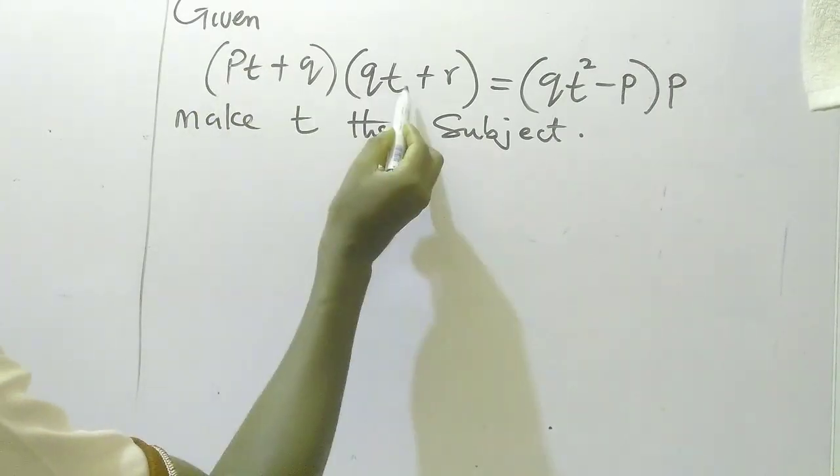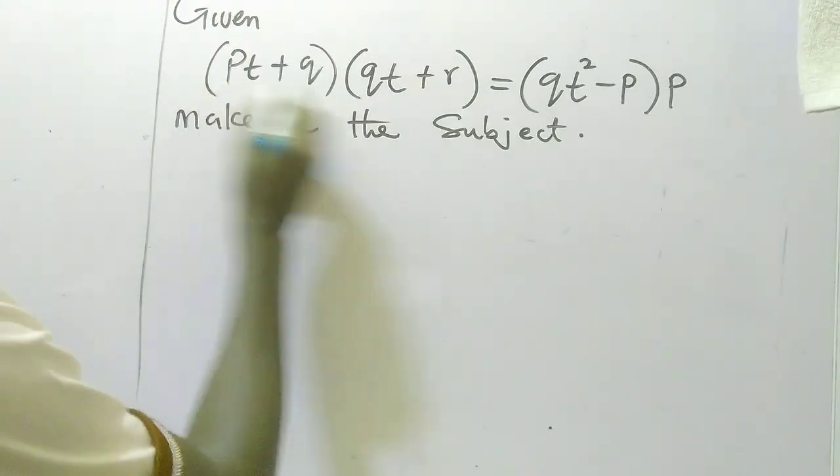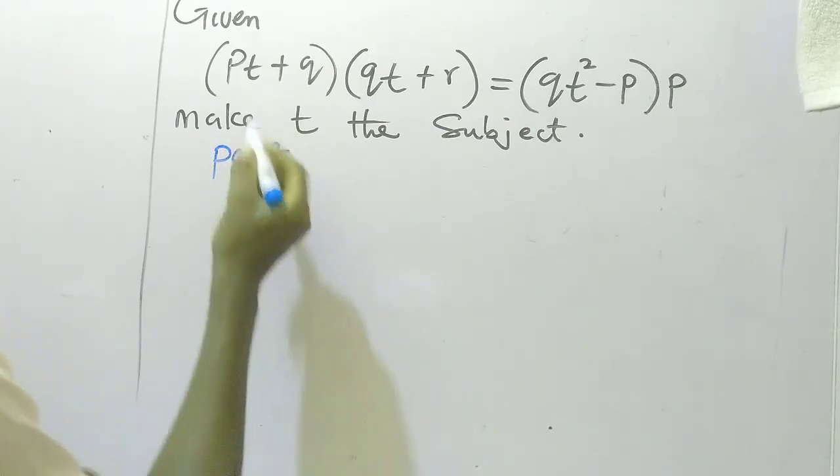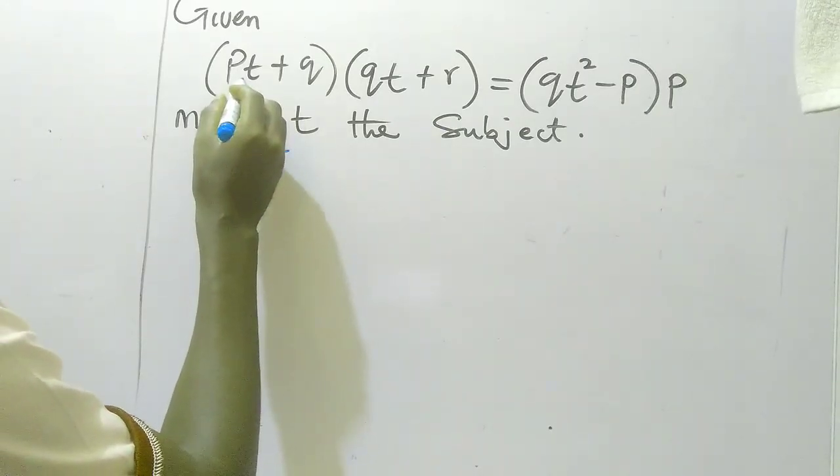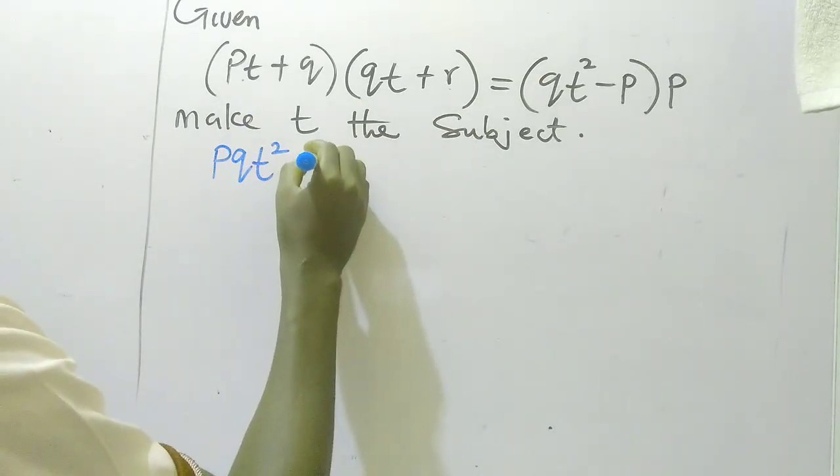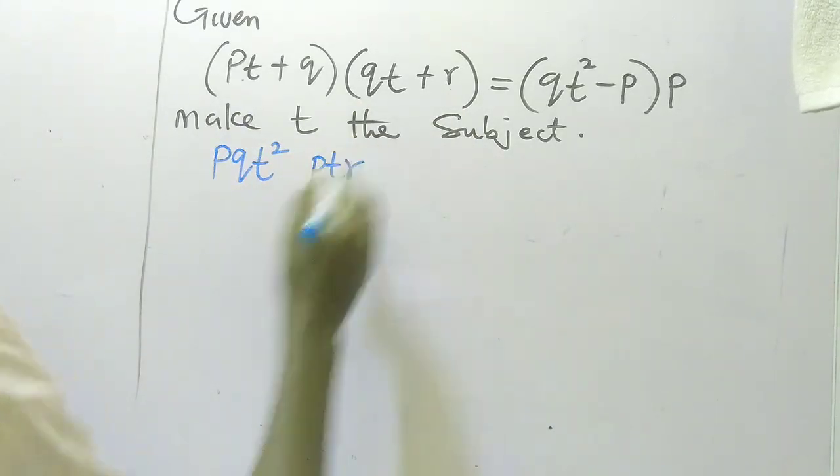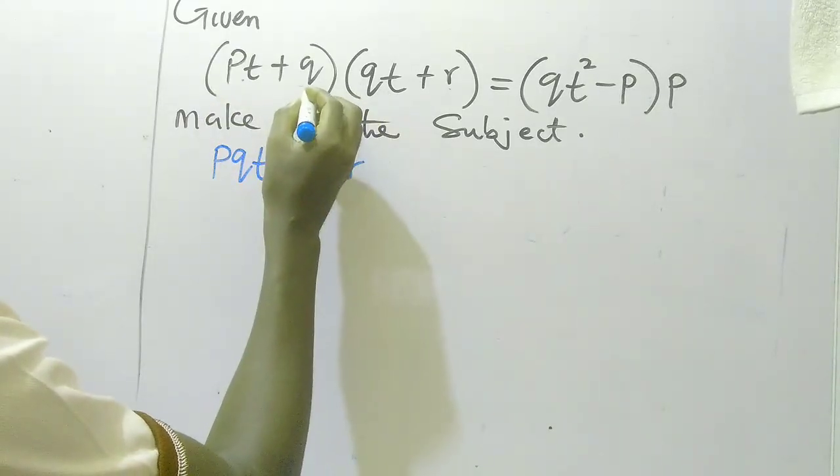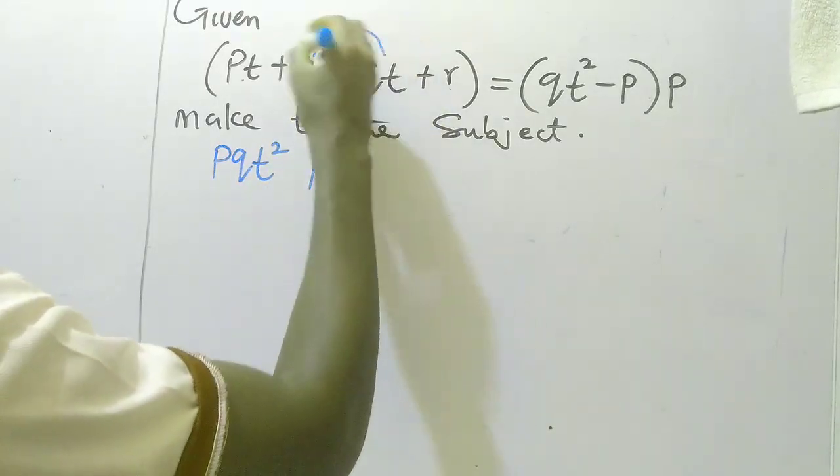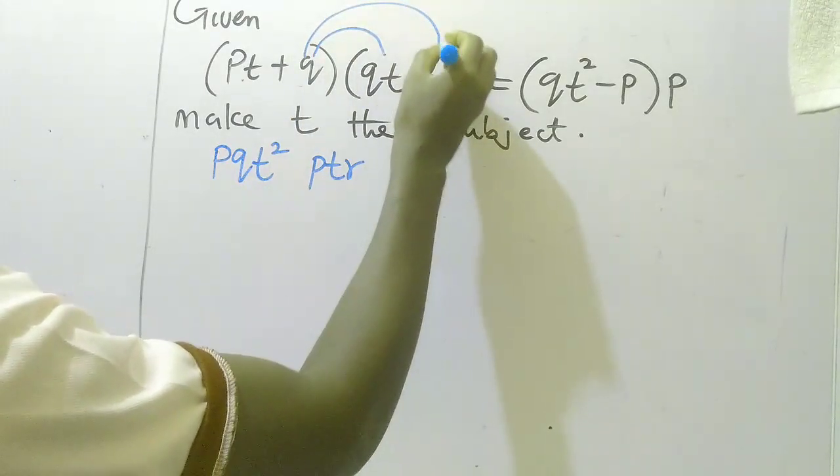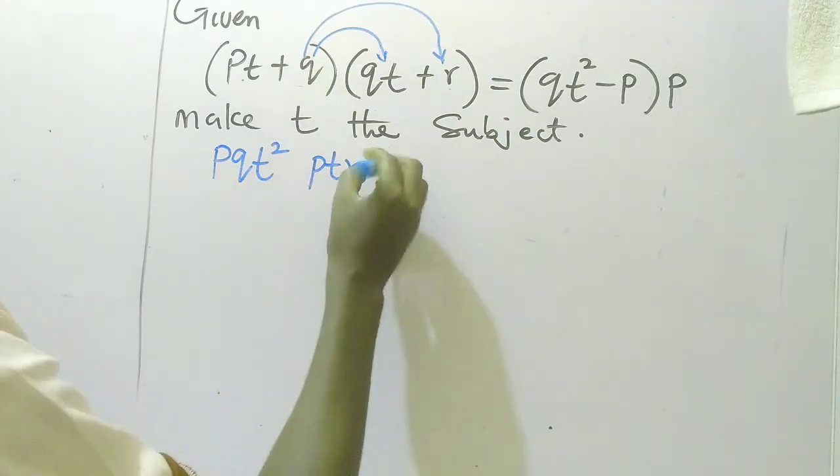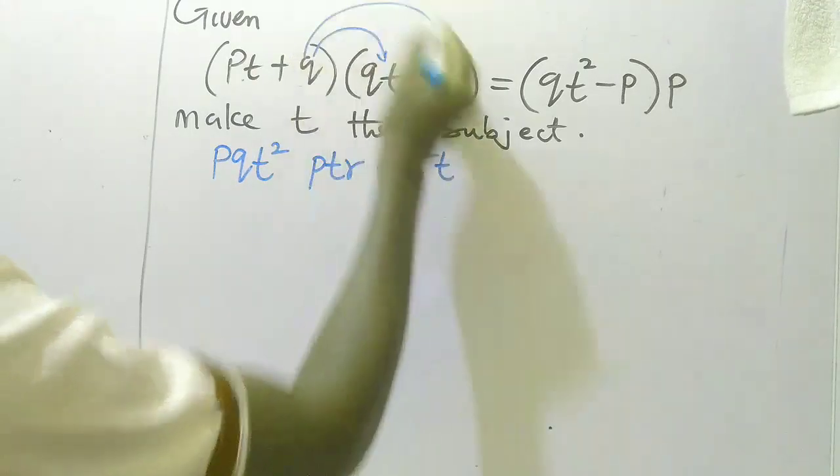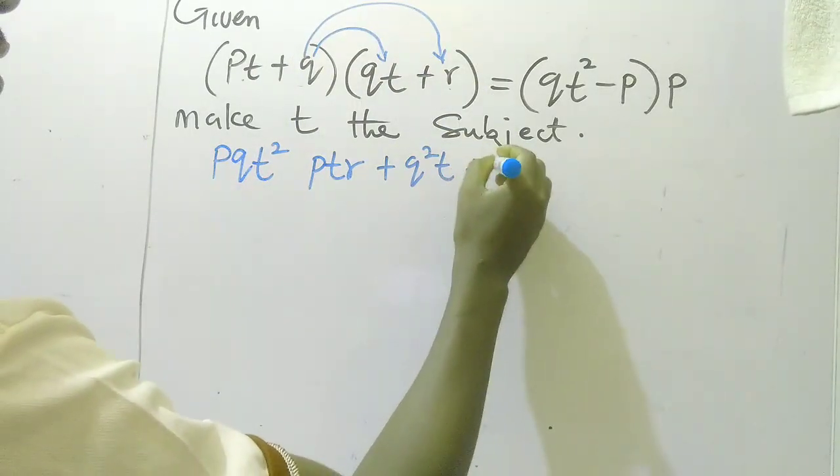pt times this, so if this times this we're going to have pqt². Again, use this to times this, that will give us pt. Now next I'm going to use q to times this. So my multiplication is this times this, after that I do this times this. So q times this, that will give me q²t, then q times r that will give me qr.